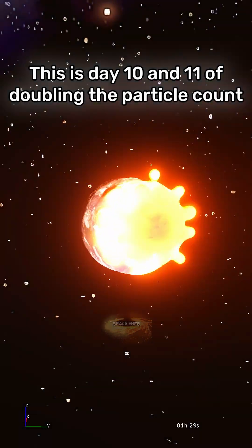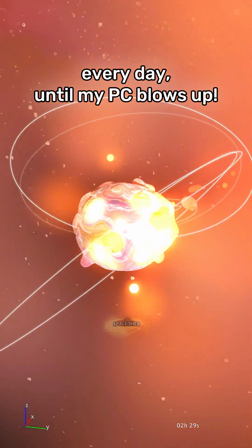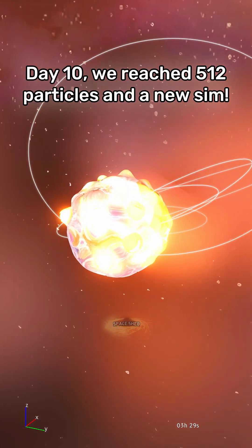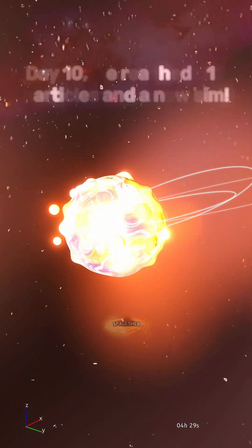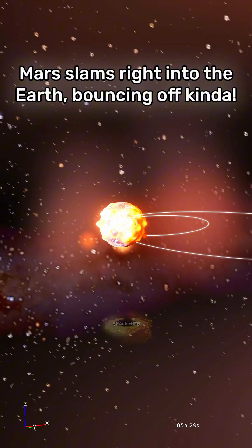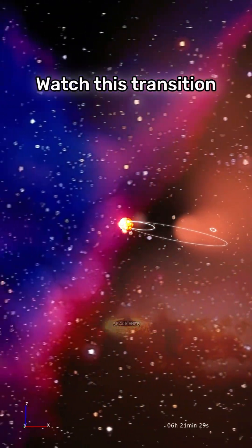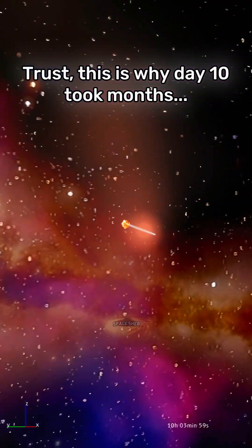This is day 10 and 11 of doubling the particle count every day until my PC blows up. On day 10, we reach 512 particles and a new sim. Mars lands right into the Earth, bouncing off it. Watch the transition. This is why day 10 took over a month.